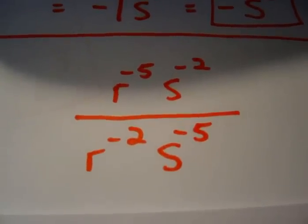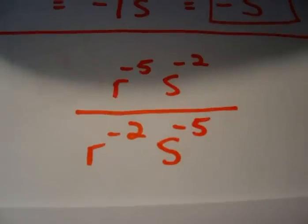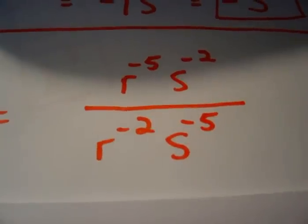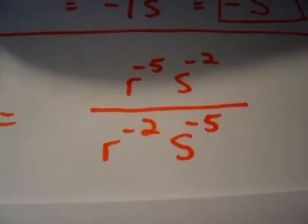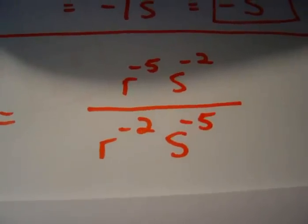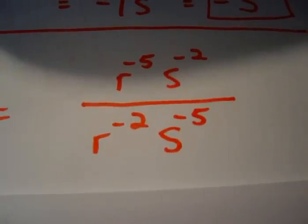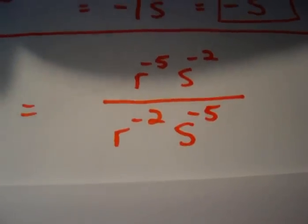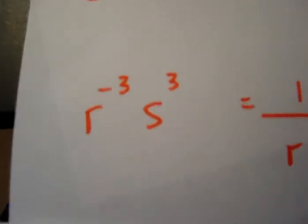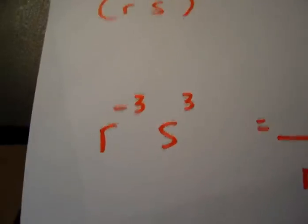Now we're going to subtract because we're dividing by variables that are alike in the numerator and denominator. So for the r variable, we're going to do negative 5 take away negative 2. And for the s variable, we're going to do negative 2 take away negative 5. Doing the math there, we arrive at the following. We get r to the negative 3rd, s to the 3rd.